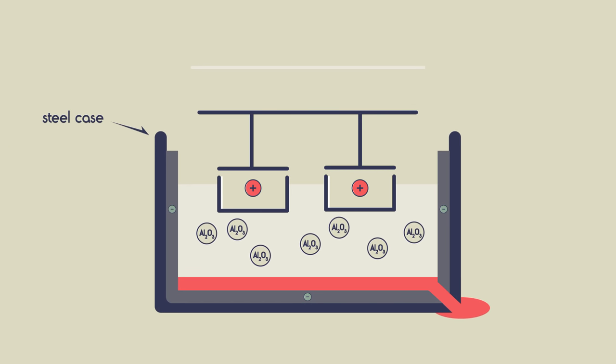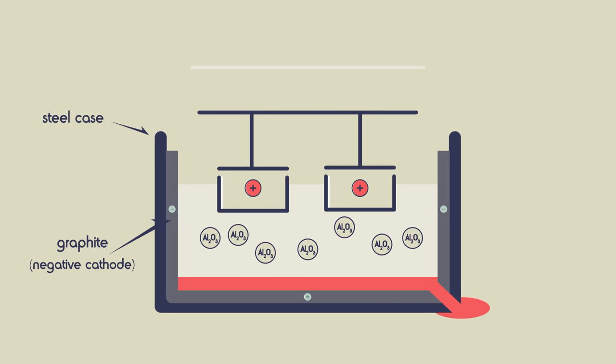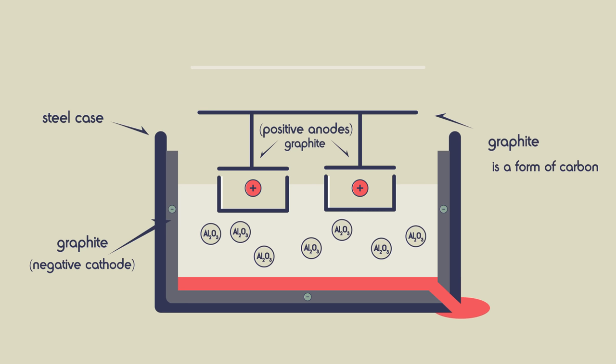The steel case is coated with graphite, providing the negative cathode. The positive anodes are immersed in the molten cryolite and are also made of graphite. Remember that graphite is a form of carbon.